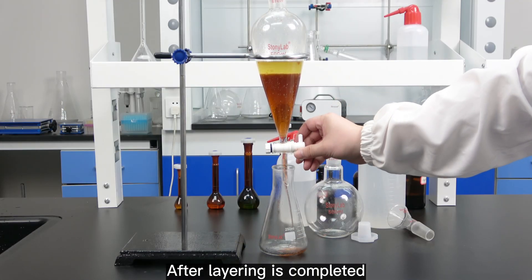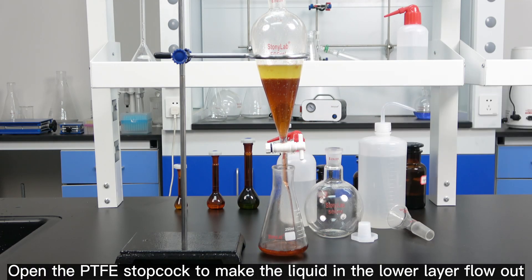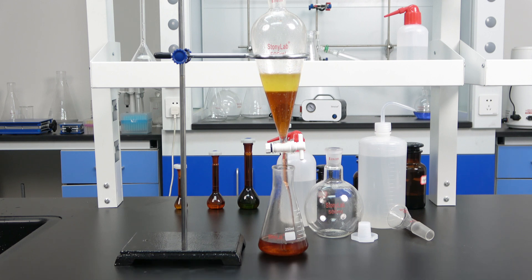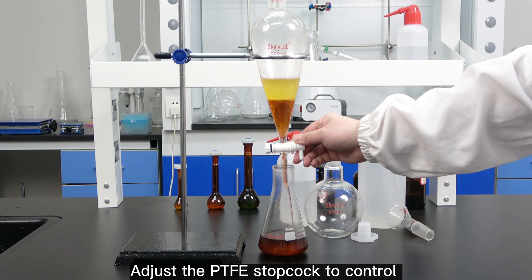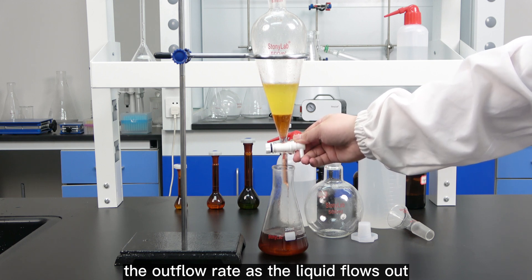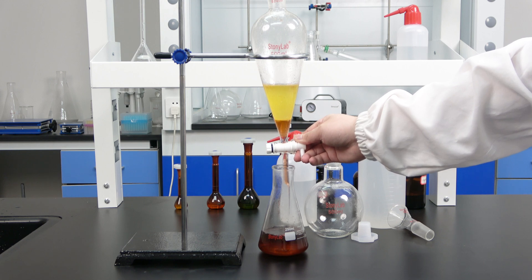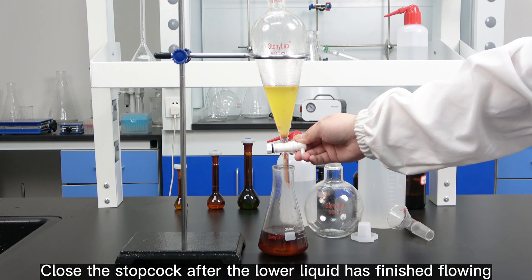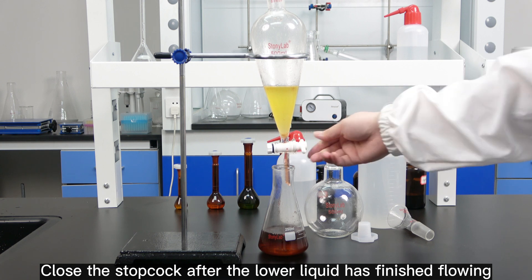After layering is completed, open the PTFE stopcock to make the liquid in the lower layer flow out. Adjust the PTFE stopcock to control the outflow rate as the liquid flows out. Close the stopcock after the lower liquid has finished flowing.